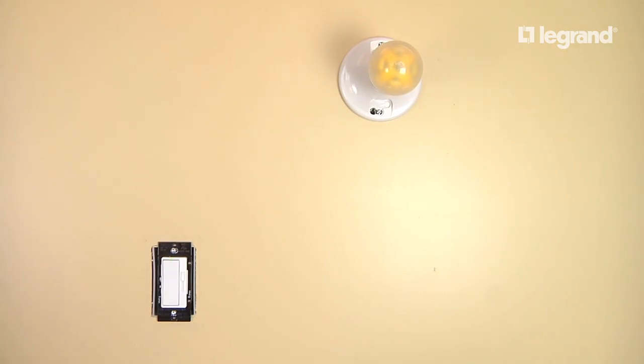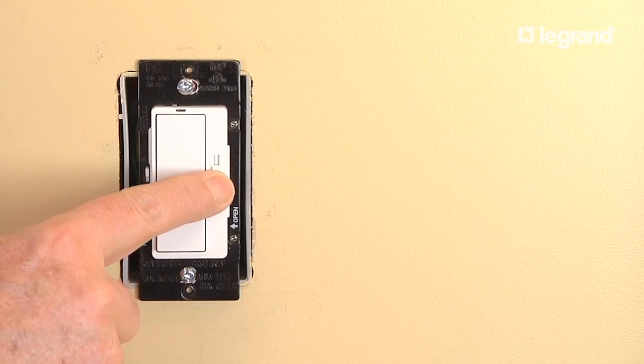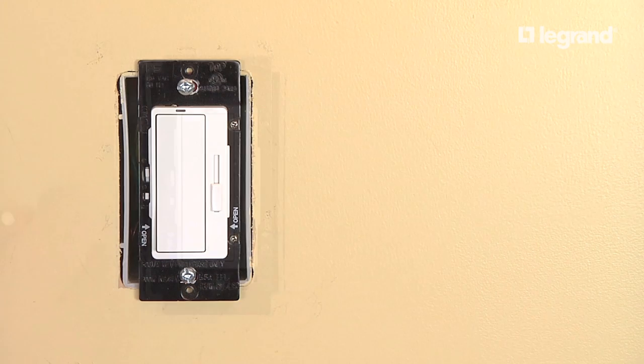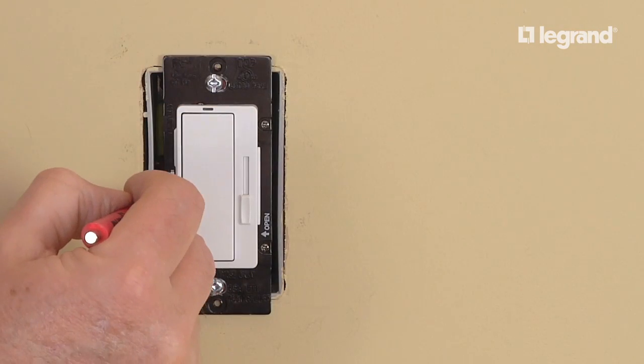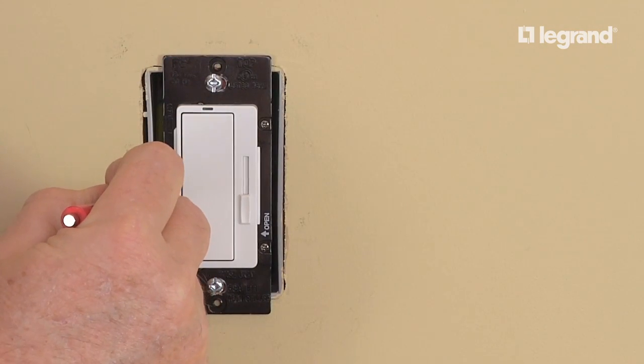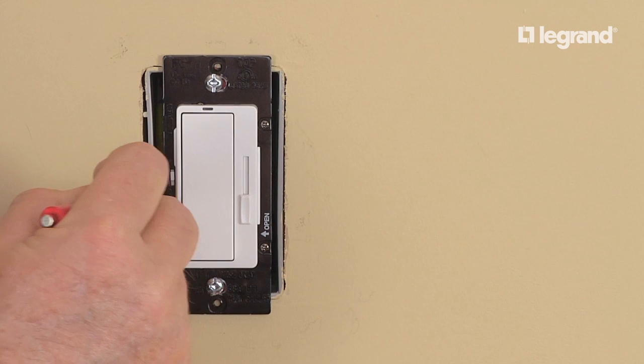To adjust the minimum trim level, you must first turn on the dimmer and move the slider to its lowest or minimum light level position. Now, hold the calibration button for approximately 5 seconds until the locator LED at the top of the dimmer starts to flash.